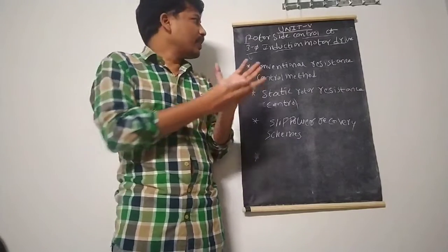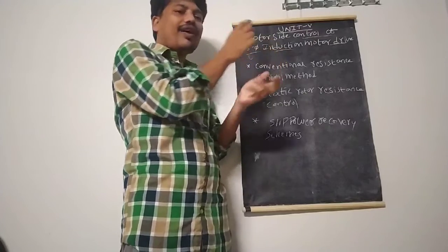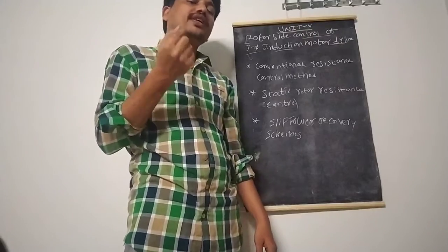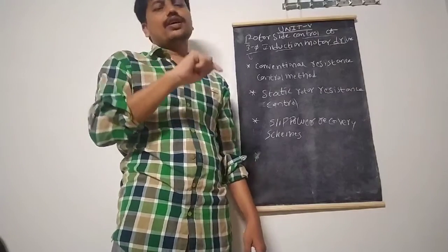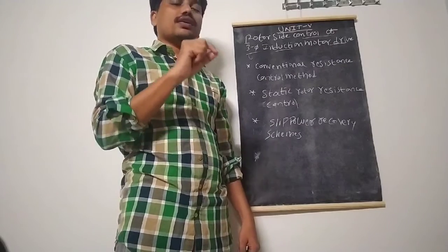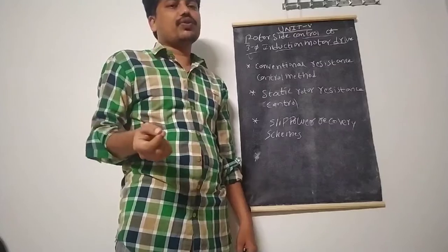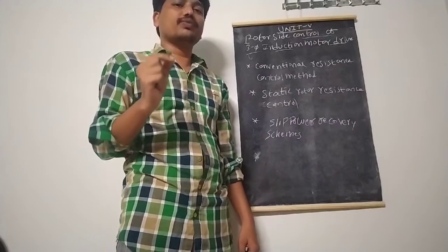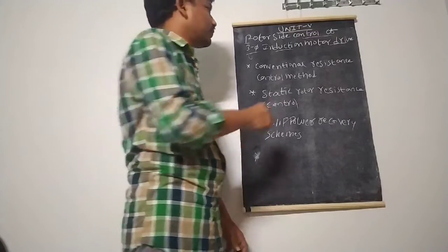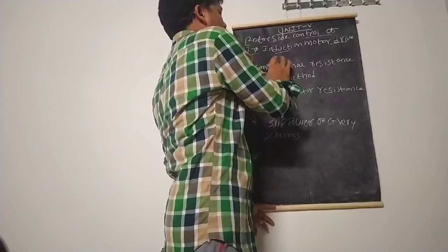The rotor side control method is only applicable for the slip ring induction motor, not for the squirrel cage induction motor. The stator side control method can be applied to both squirrel cage and slip ring induction motors. The other name for the slip ring induction motor is the wound rotor induction motor.